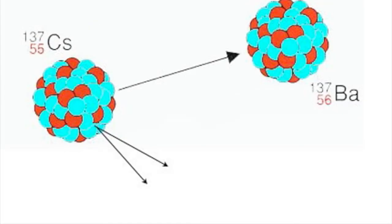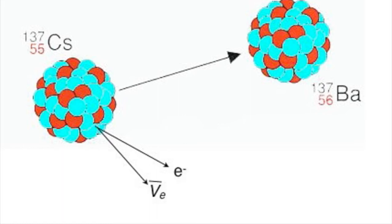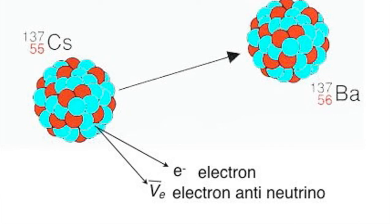In fact, two particles are emitted at the same time: a fast-moving electron, which is a beta particle, and a neutrino. This neutrino is an electron-type anti-neutrino.